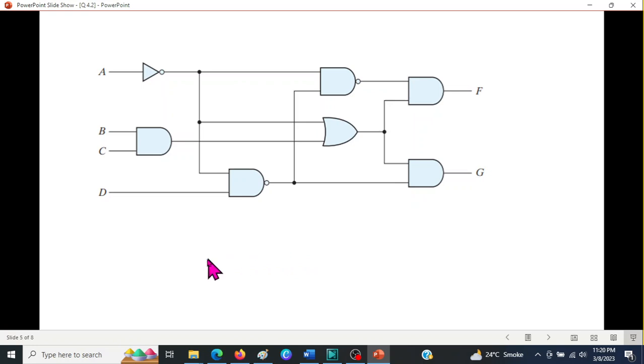So how do we start? We'll start from this point. First thing, this is an inverter circuit. So the output of this will be A'. And this A' will propagate to here, this point and this point.